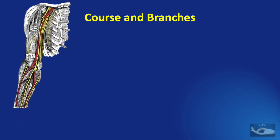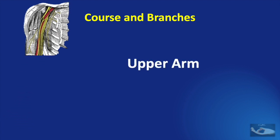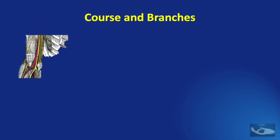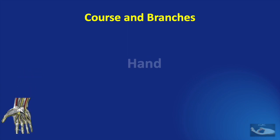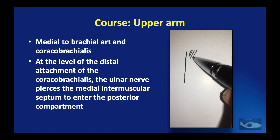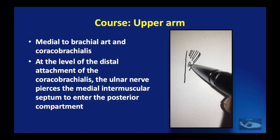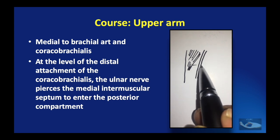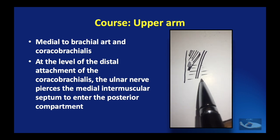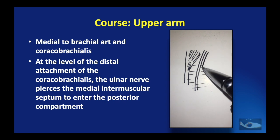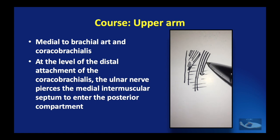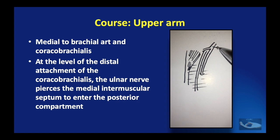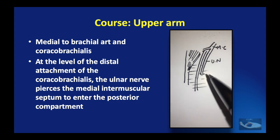We shall now follow the ulnar nerve through the upper arm, lower arm, elbow, forearm, wrist, and hand. After its formation, the ulnar nerve runs medial to the brachial artery and the coracobrachialis muscle. The coracobrachialis gets inserted to the middle of the humerus, and the brachial artery lies over the medial intermuscular septum. At the level of the insertion of the coracobrachialis, the ulnar nerve pierces the intermuscular septum to enter the posterior compartment. The medial cord gives the ulnar nerve and the medial root of the median nerve as its two terminal branches.